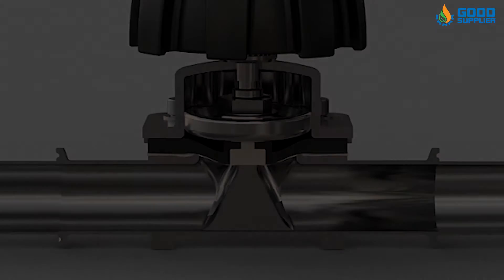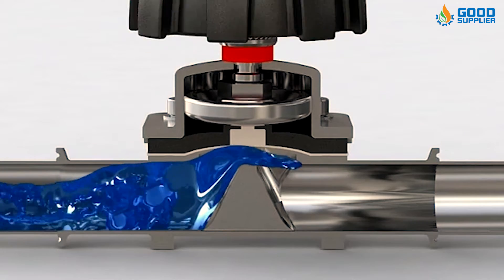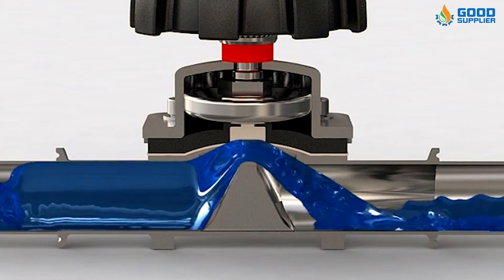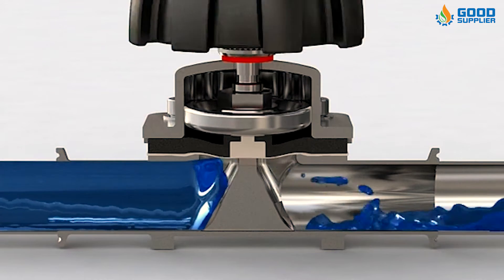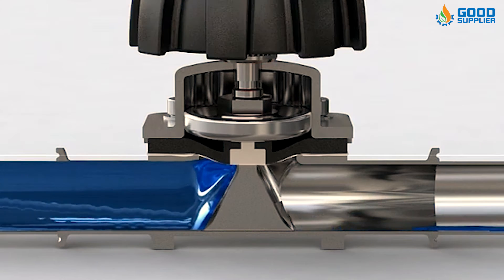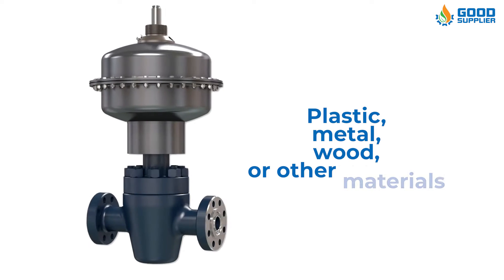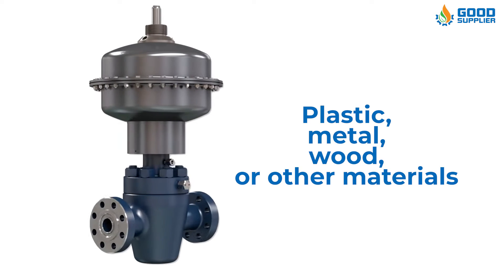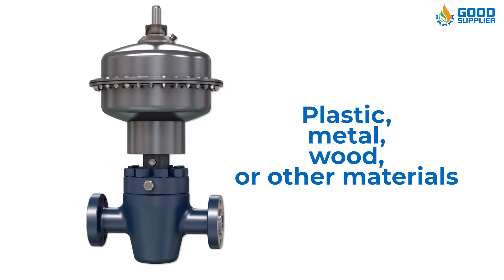Diaphragm valves, or membrane valves, consist of a valve with two or more ports, a diaphragm, and a weir or saddle or seat upon which the diaphragm closes the valve. The valve body may be constructed from plastic, metal, wood, or other materials depending on the intended use.